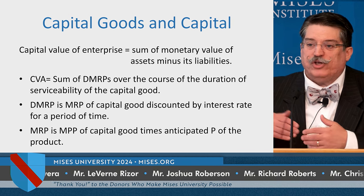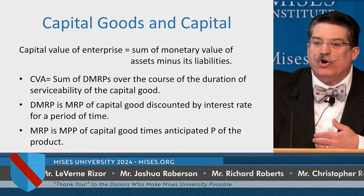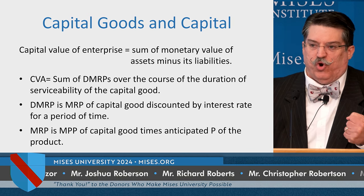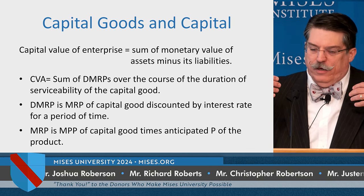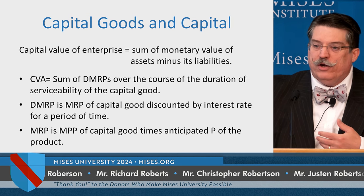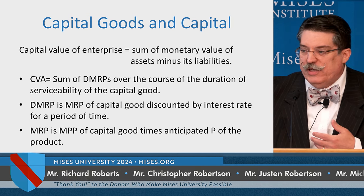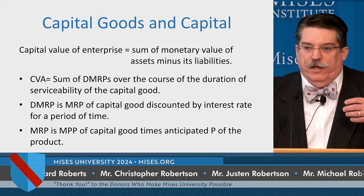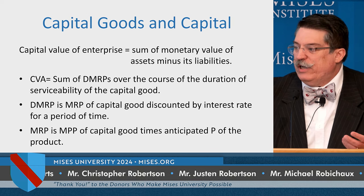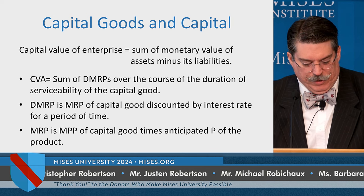Therefore, the capital value of an asset and the capital value of the firm are going to be affected by the productivity of the capital good — how good the oven is at baking. It's also going to be affected by the price of the product you're selling, the rate of time preference and interest rate, and the duration of serviceability — how durable the oven is.